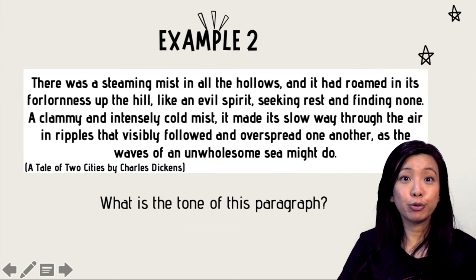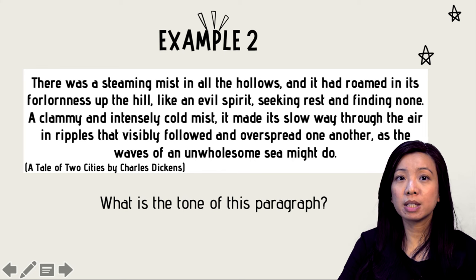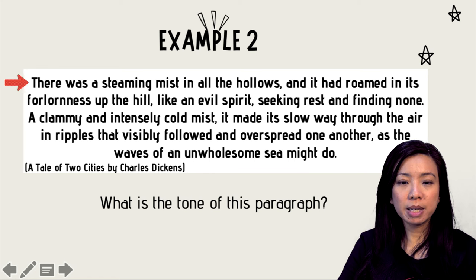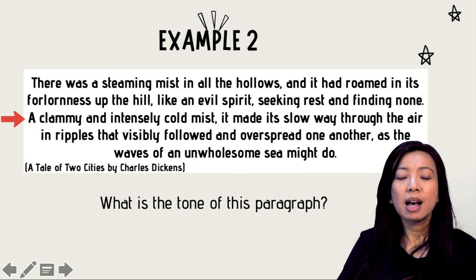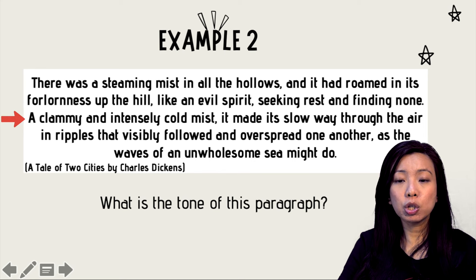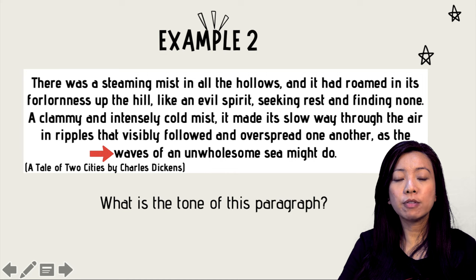Let's go on to example two, taken from Charles Dickens' A Tale of Two Cities. 'There was a steaming mist in all the hollows, and it had roamed in its forlornness up the hill, like an evil spirit, seeking rest and finding none. A clammy and intensely cold mist, it made its slow way through the air in ripples, that visibly followed and overspread one another, as the waves of an unwholesome sea might do.'